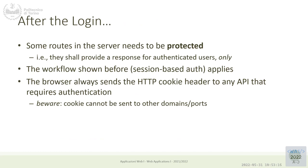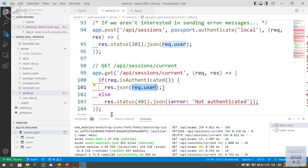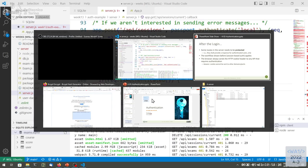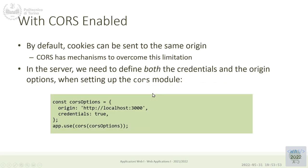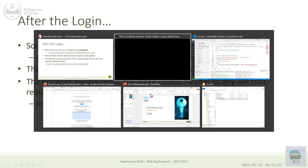Right now we logged in and we want to be able to specify that some of the other APIs — not the login one — need to be protected. So they can only be called after a successful login. Everything is already in place. The browser already sends the cookie and Passport already unlocks it.